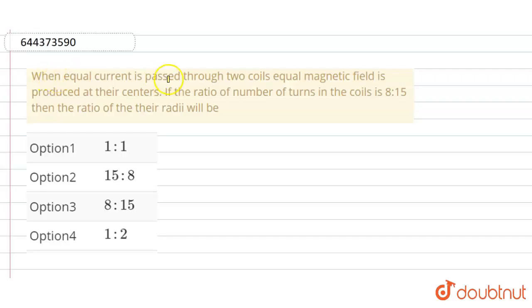Hello everyone, when equal current is passed through two coils, equal magnetic field is produced at their centers. If the ratio of number of turns in the coils is 8 to 15, then the ratio of their radii will be...